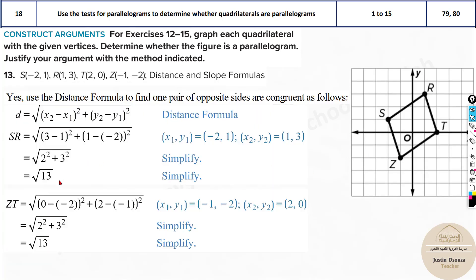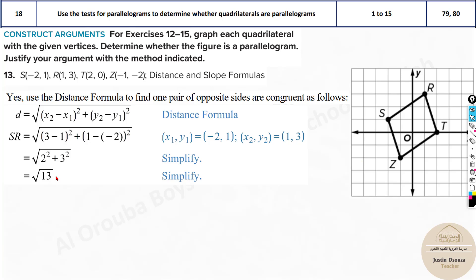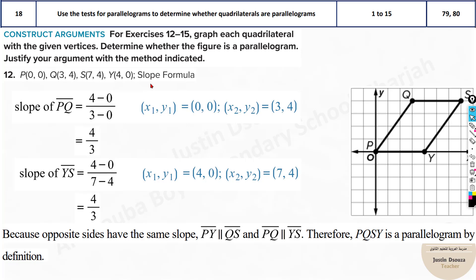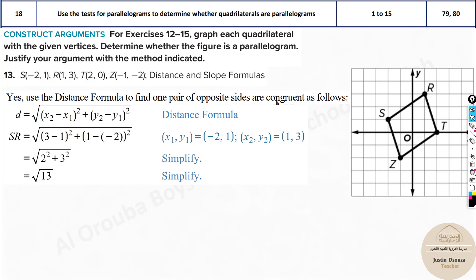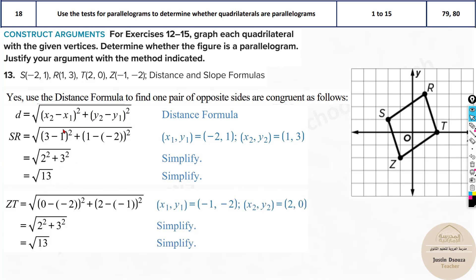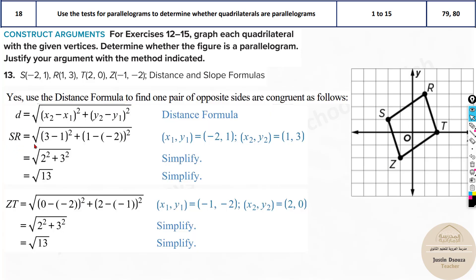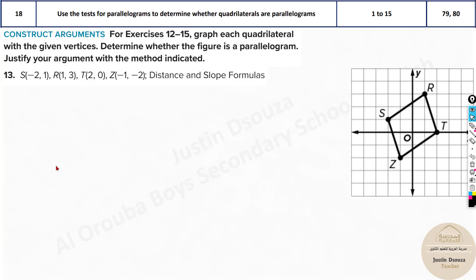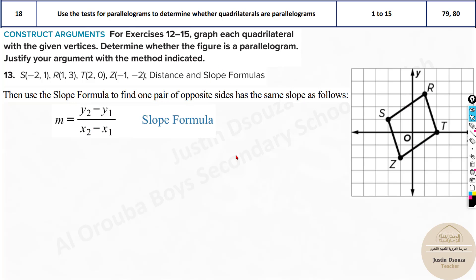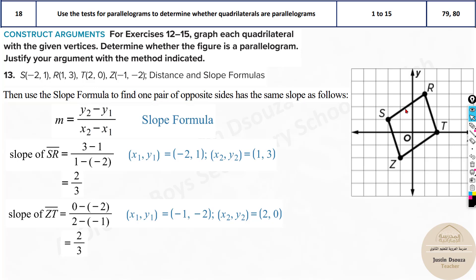Here they have used the distance formula — that's fine. You can use the distance formula or the slope formula. In the exam, if they specify to use both distance and slope formulas, use both. The distance formula is D equals square root of (x2 minus x1)² plus (y2 minus y1)². Find the distance of one pair of opposite sides — say ST and ZT — are they equal? Yes. Then find the slope of those same lines.